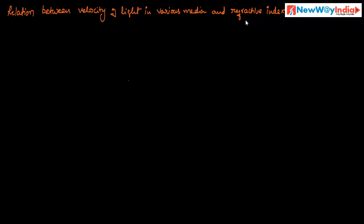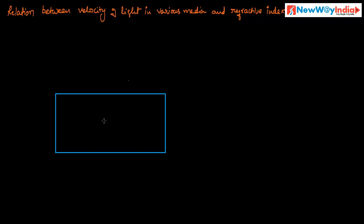Let us discuss the relation between the velocity of light in various media and refractive index. What is the velocity of light in air or vacuum? It is 3 into 10 power 8 meter per second. This is the velocity of light in vacuum or air.